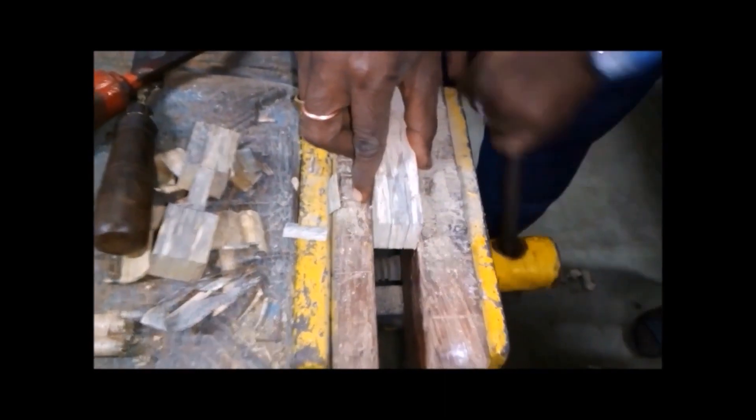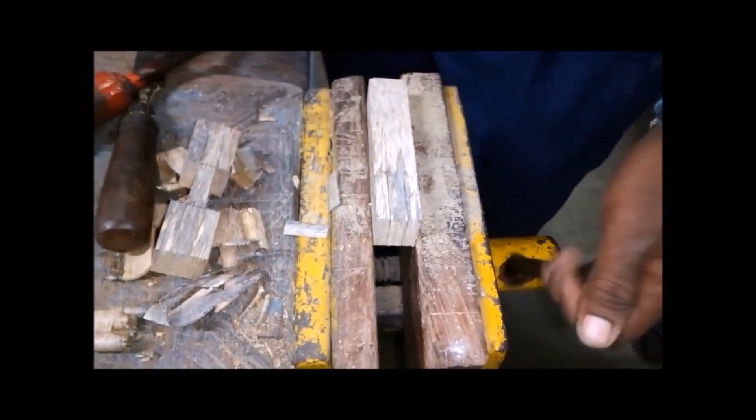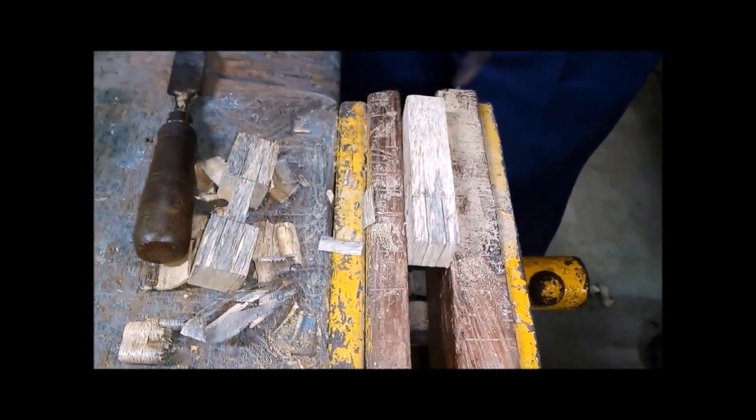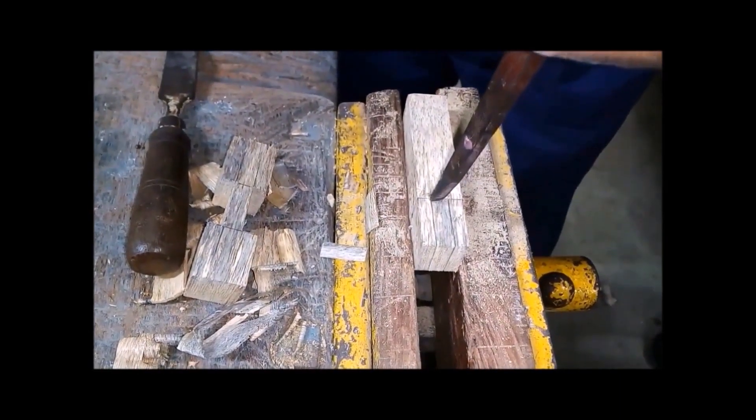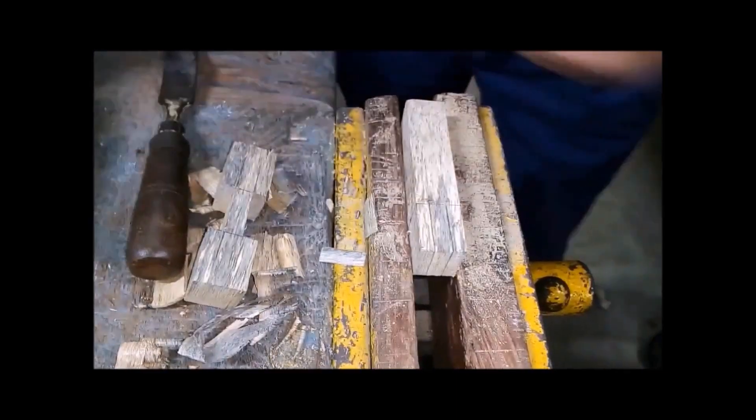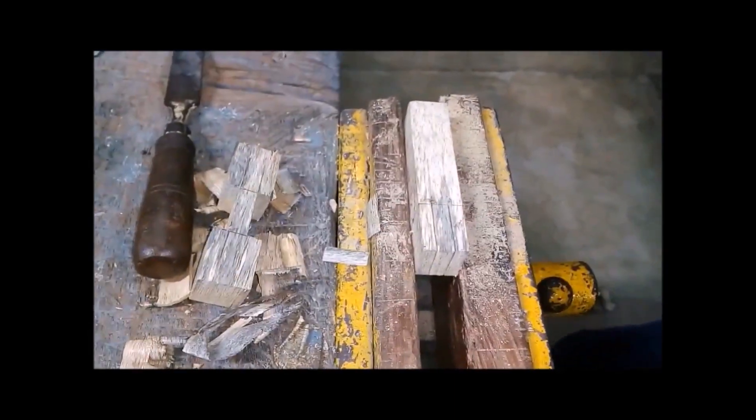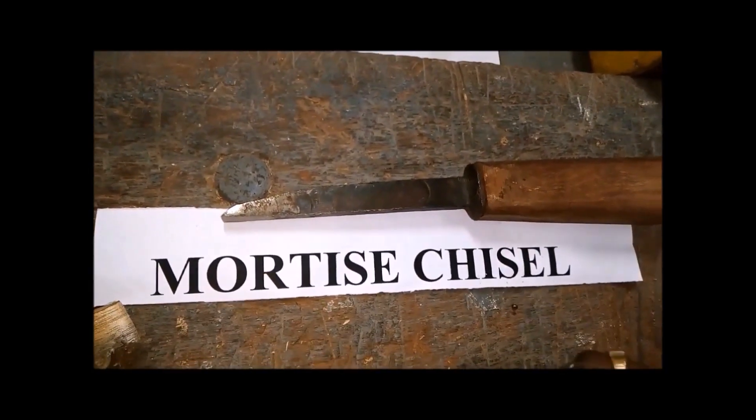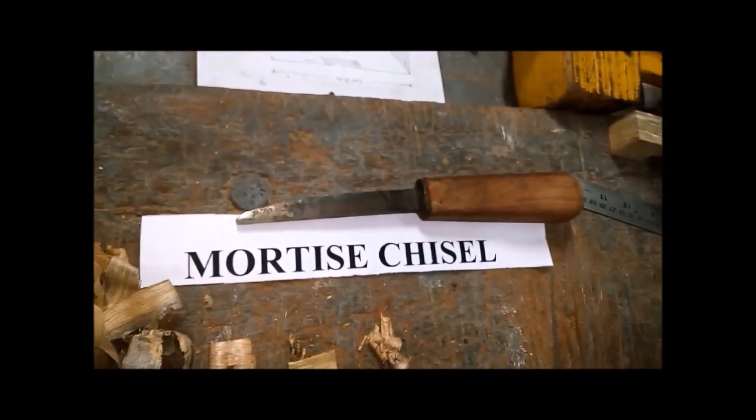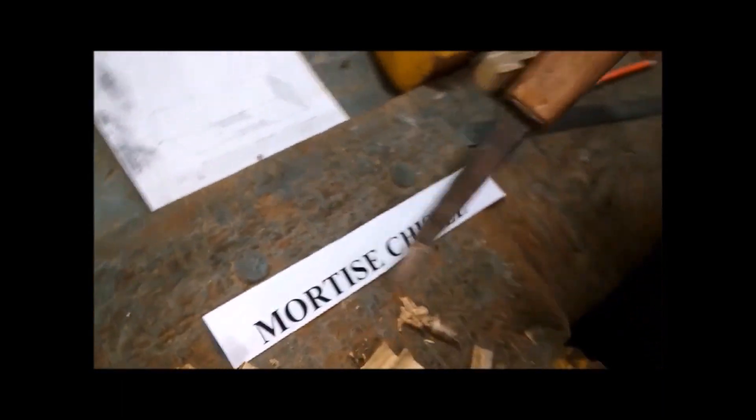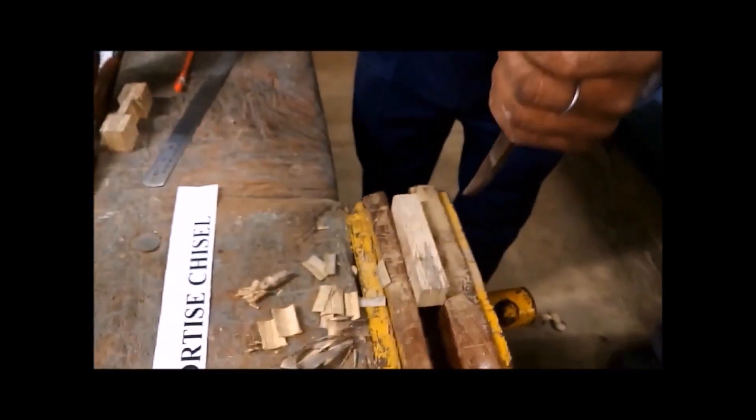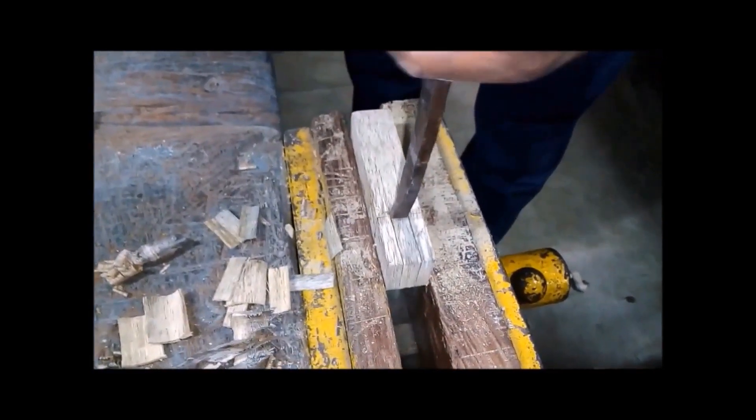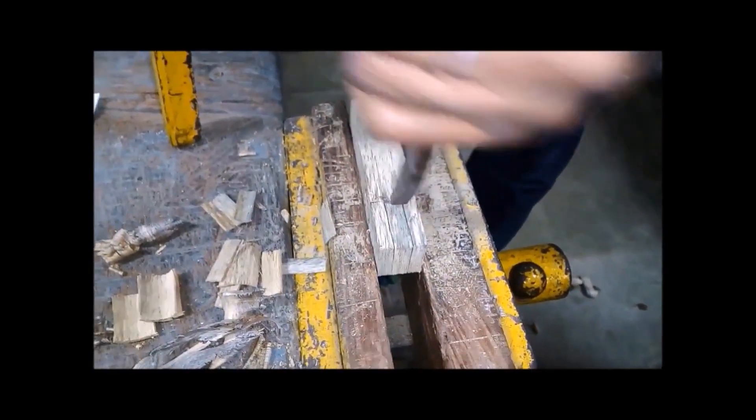Now we will fix the mortise member in the vise. With the help of mortise chisel we remove most of the waste from the slot.